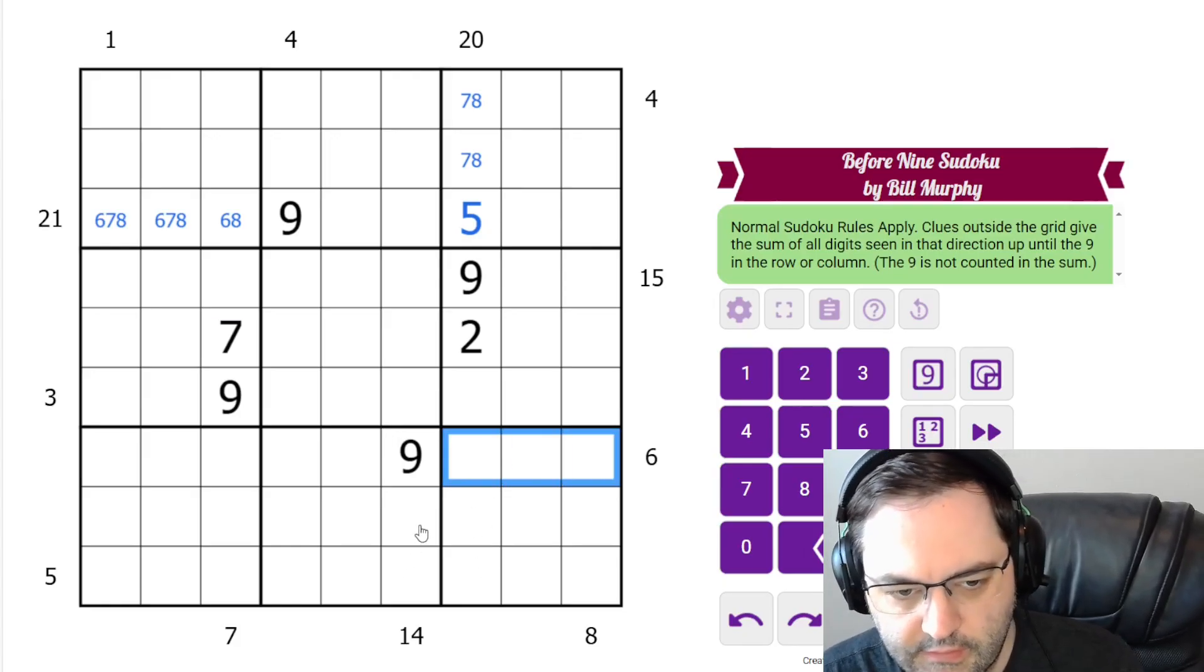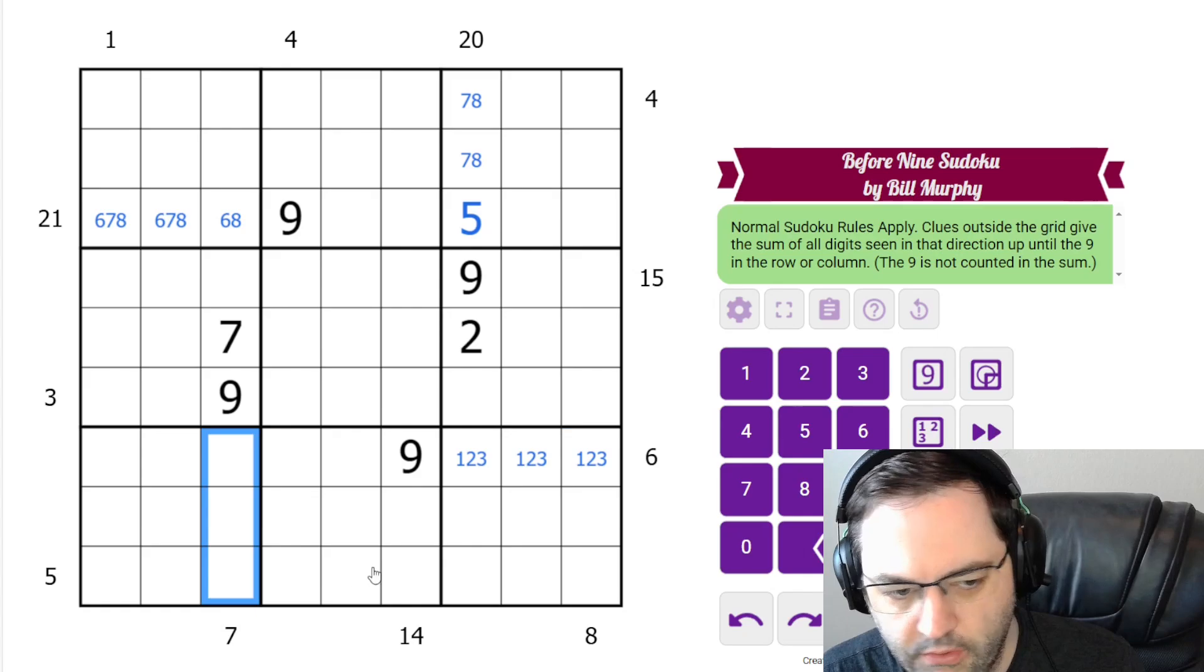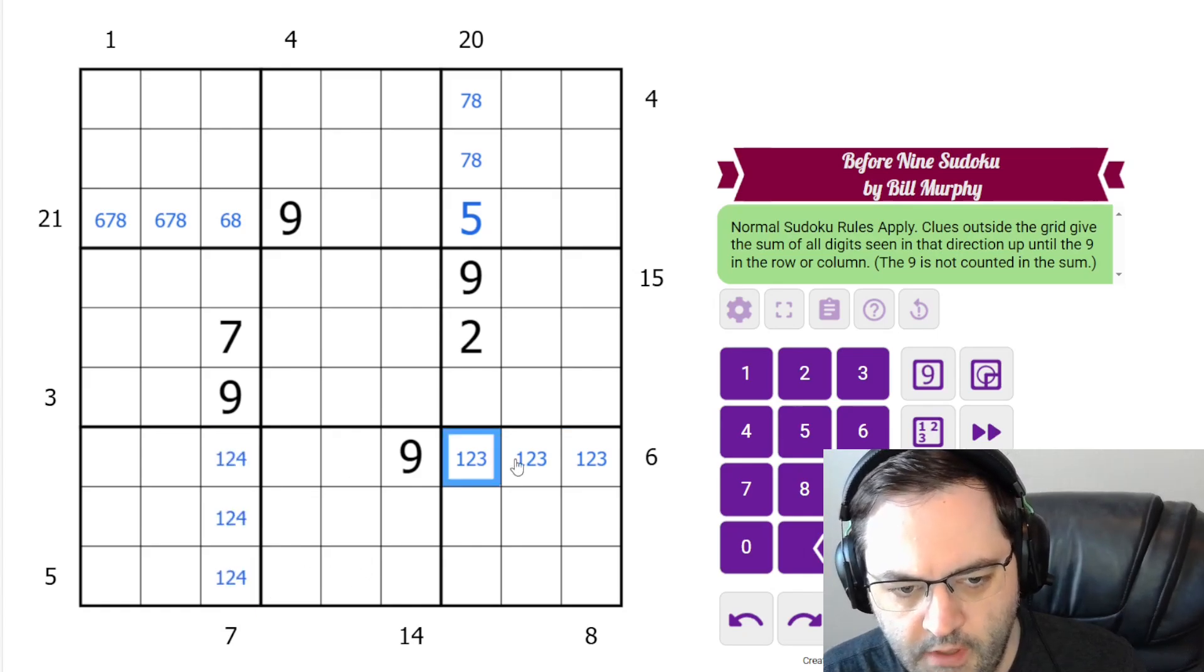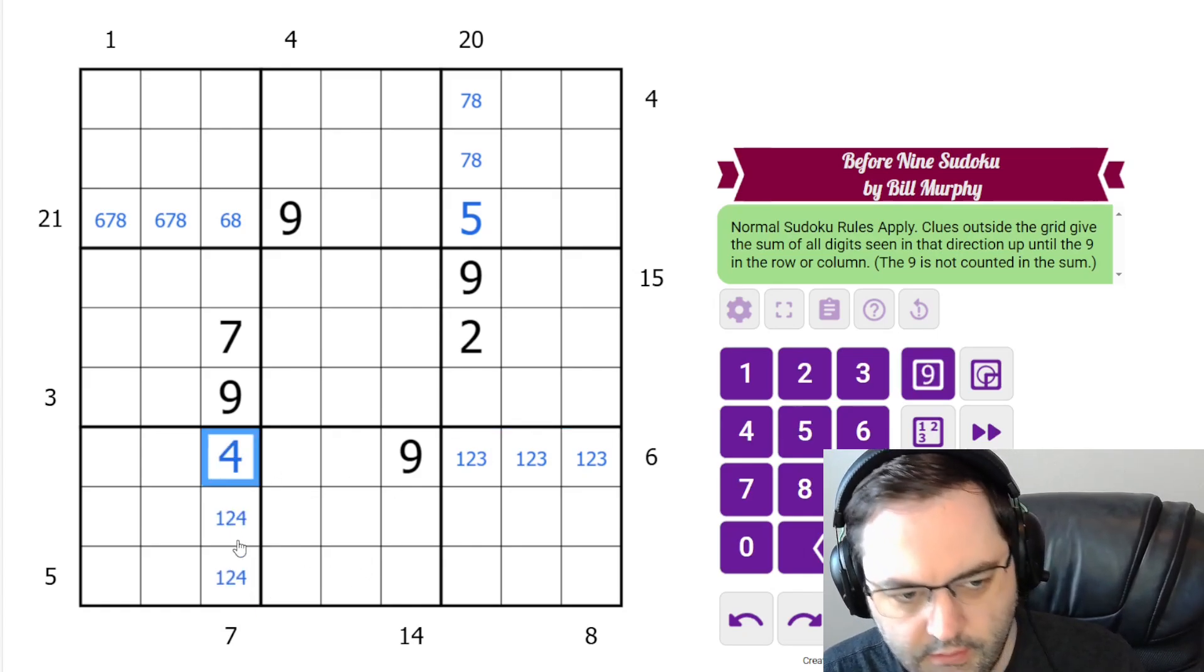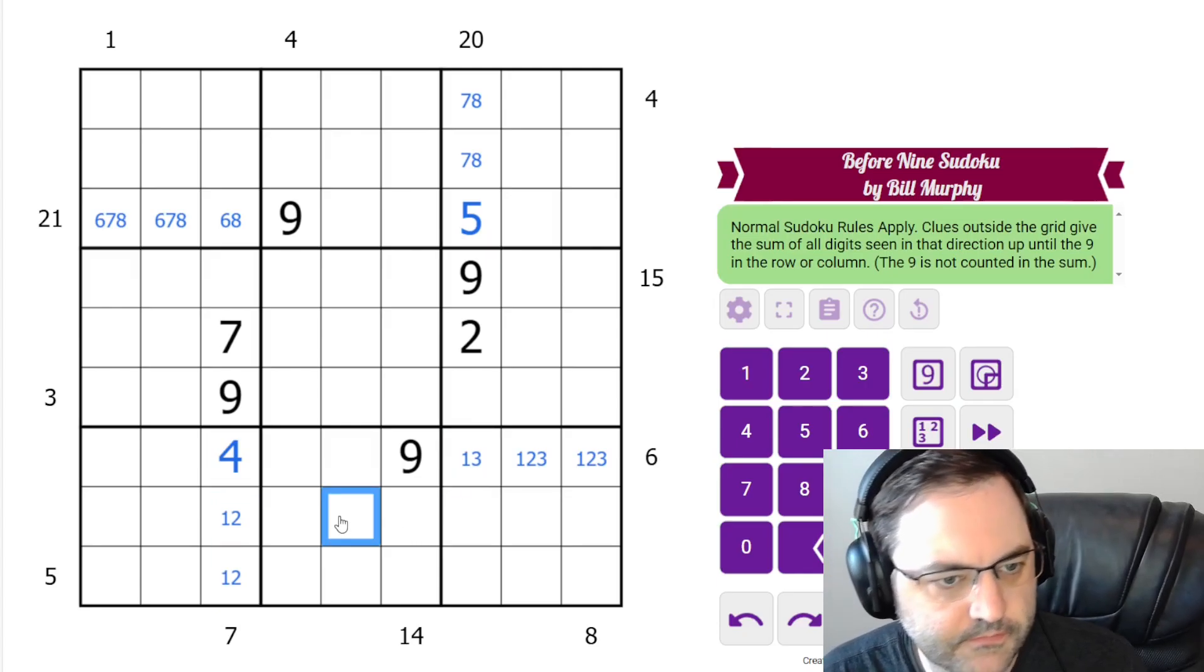Down here, the only way to do 6 in three cells is 1, 2, 3. The only way to do 7 is 1, 2, 4. The 1, 2, 3 looks at this cell, so that's 4, and this is not 2.